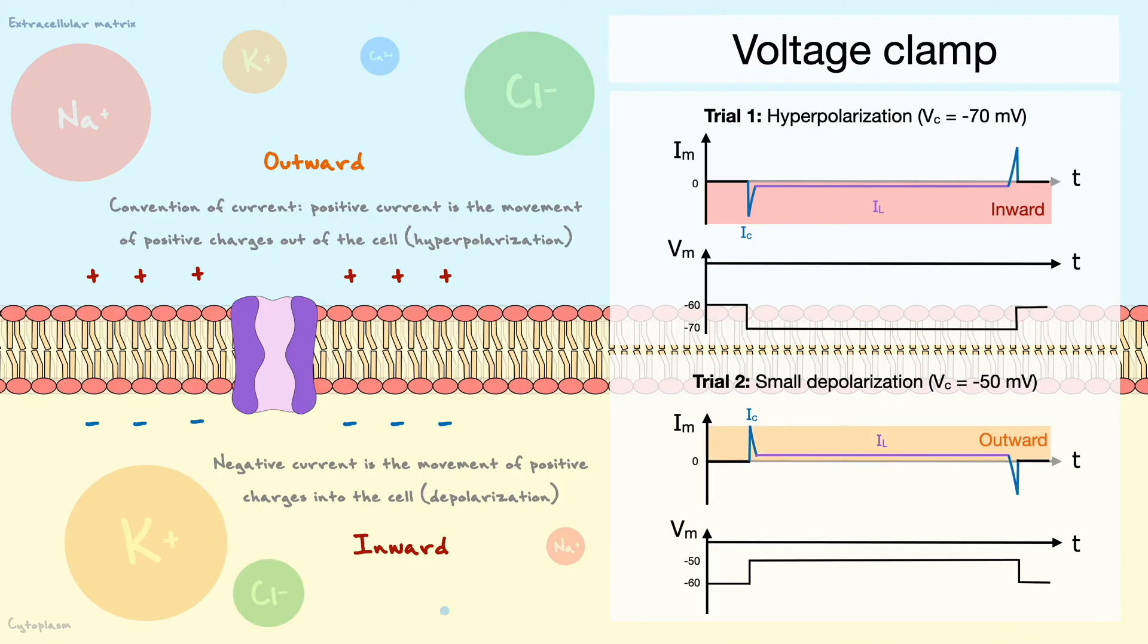The logic behind this, which ties everything together, is that in the first scenario, the apparatus is trying to make the cell more negative. But the cell wants to be at rest, so to fight the injected hyperpolarizing current, the current going out of the leak channels will be depolarizing, or in other words, inward.